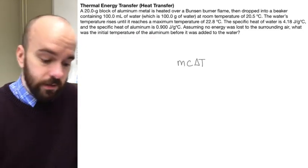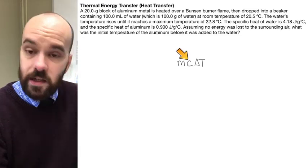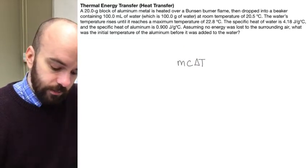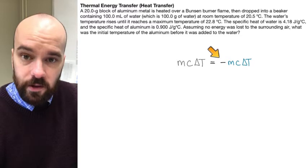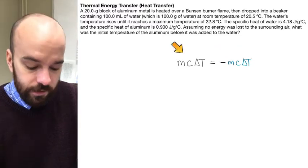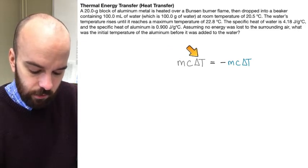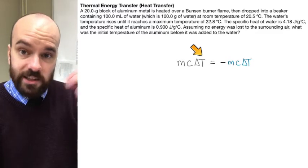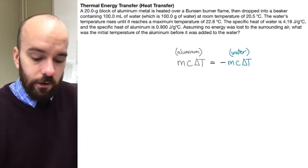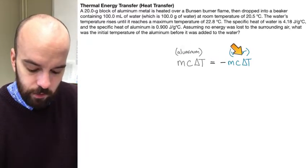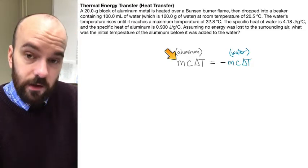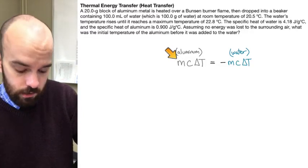Here's how we set up this type of problem. It starts with MC∆T — M being the mass of the substance, C being the specific heat of that substance, and ∆T being how much that temperature changes. That's for aluminum, and it's going to equal the opposite of the MC∆T of the other substance. This term MC∆T represents the amount of energy that's gained or lost by one of the substances. On the left I'm going to have aluminum, and on the right I'm going to have water — written in gray for aluminum and blue for water. So the aluminum's MC∆T represents the amount of energy that aluminum is going to lose during this mixing.